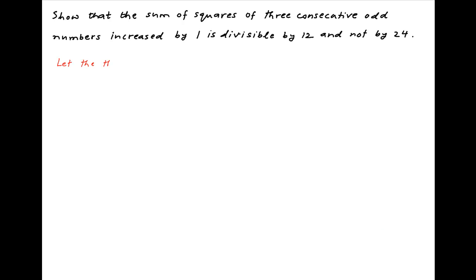Let's assume that the three consecutive odd numbers are 2n minus 1, 2n plus 1, and 2n plus 3.